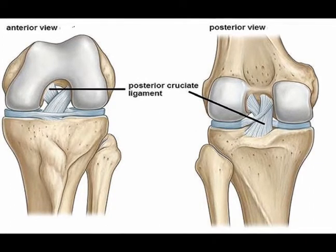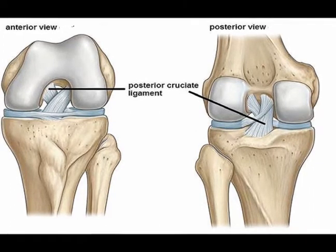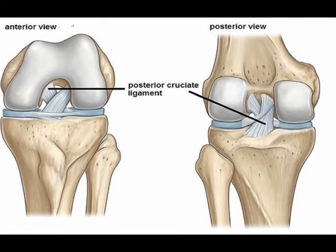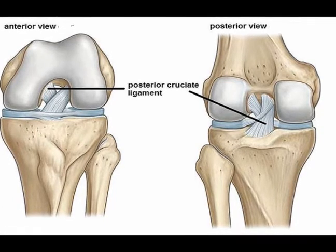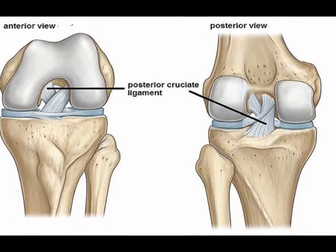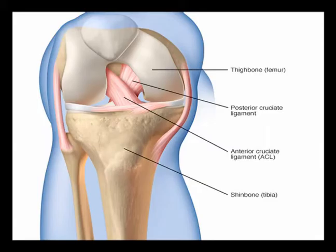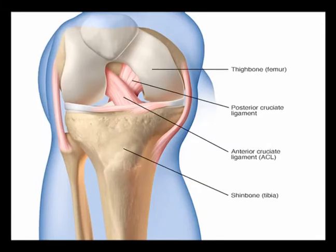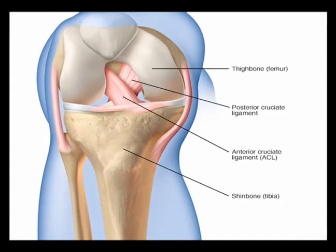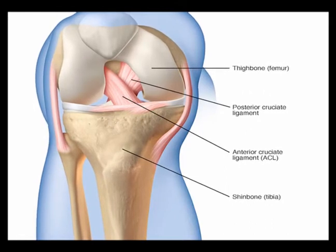Thus, the function of the posterior cruciate ligament is to provide stability to the knee joint by preventing an excessive amount of posterior tibial translation on the femur. The PCL is located deep within inside the knee joint.